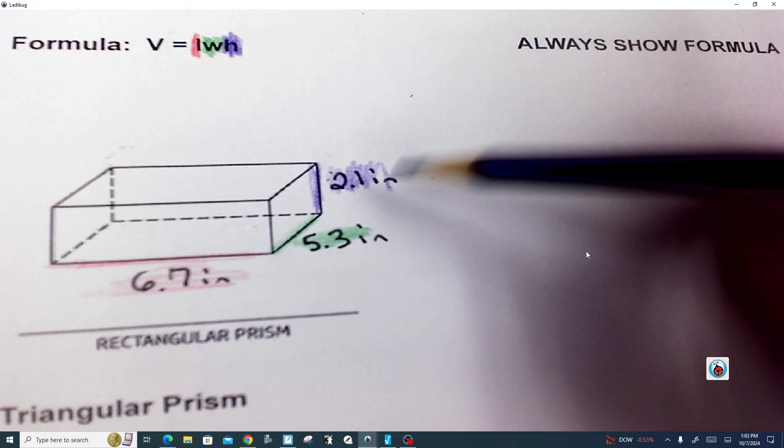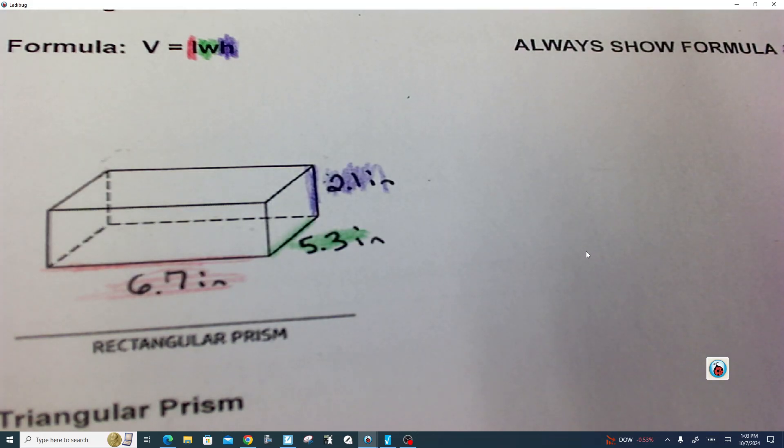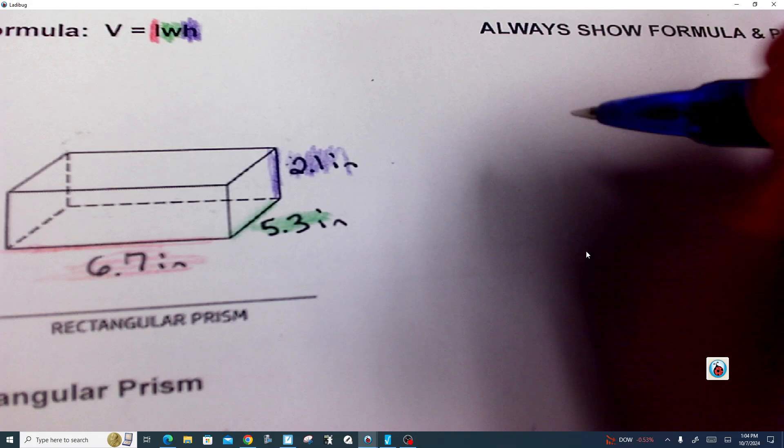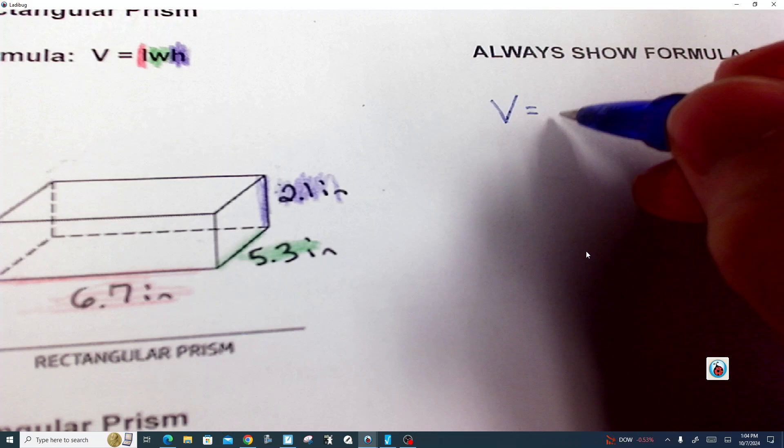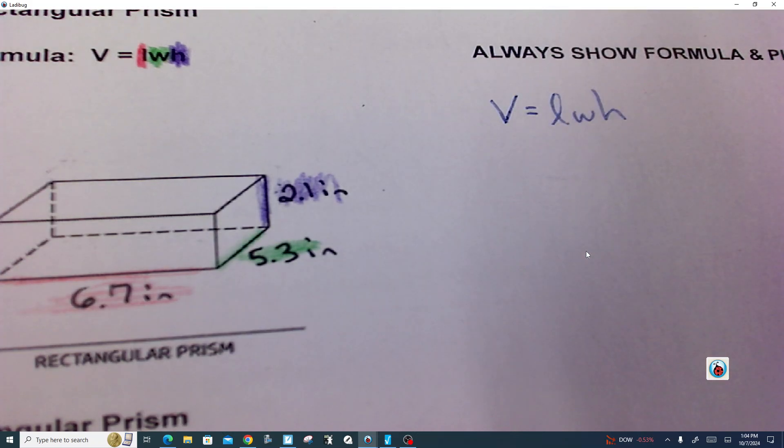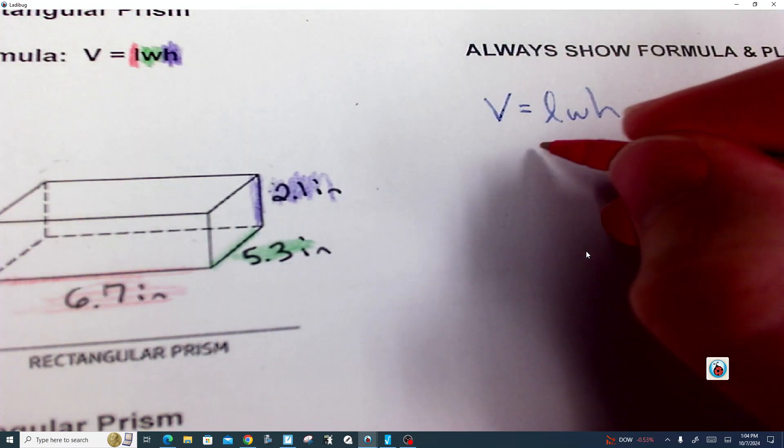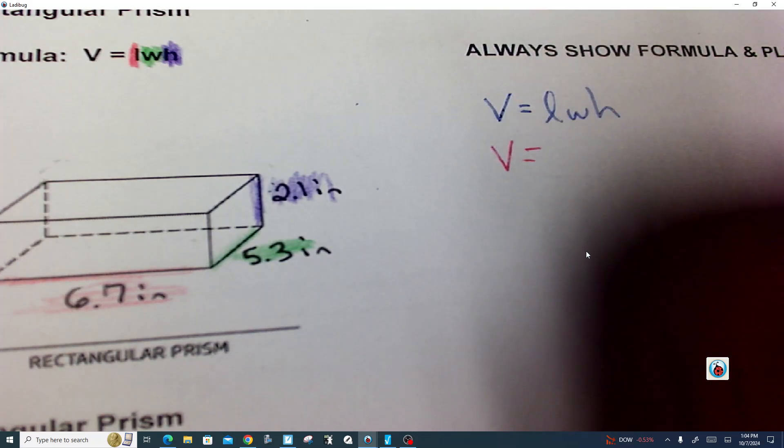So all honestly all that you have to do to show this work in the correct fashion is restate your formula. That's a big thing for me. Can you please write down V equals LWH, okay? And then let's go and write this one in.